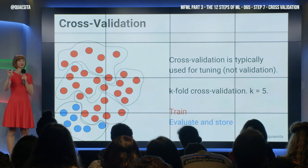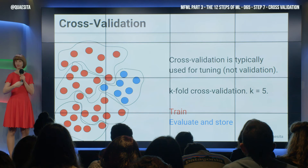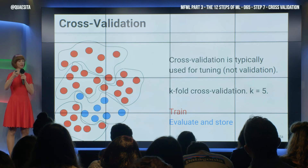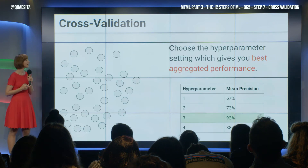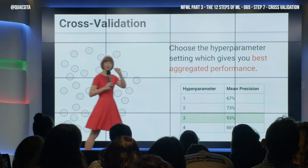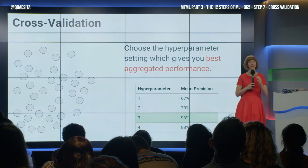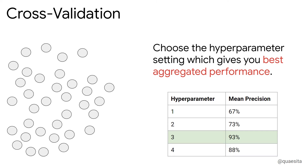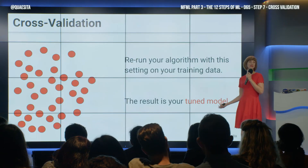But before I move to the next hyperparameter setting, I'm going to do this all again, except now the evaluation set has shifted. And again, and again, and again — five times. Move to the next setting. And so forth through your hyperparameters until finally you can aggregate over the five models that you fit each time, what the performance was. Then you say, which one do I like? I now have a principled choice. I set it to three, I rerun the whole thing, and the result is called my tuned model.